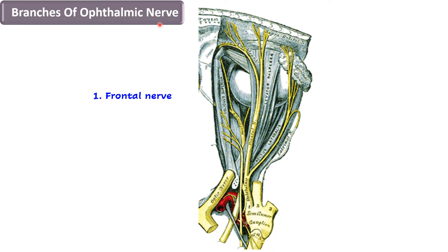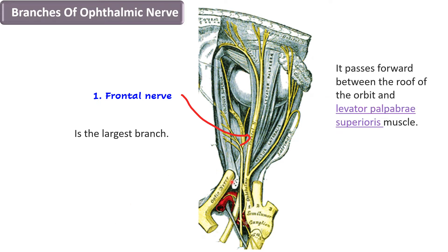Let us now look at the branches of the ophthalmic nerve. The first is the frontal nerve, which is in fact the largest branch of the ophthalmic division. The frontal nerve enters the orbit from the lateral part of the superior orbital fissure and runs straight forward between the roof of the orbit and the levator palpebrae superioris muscle.